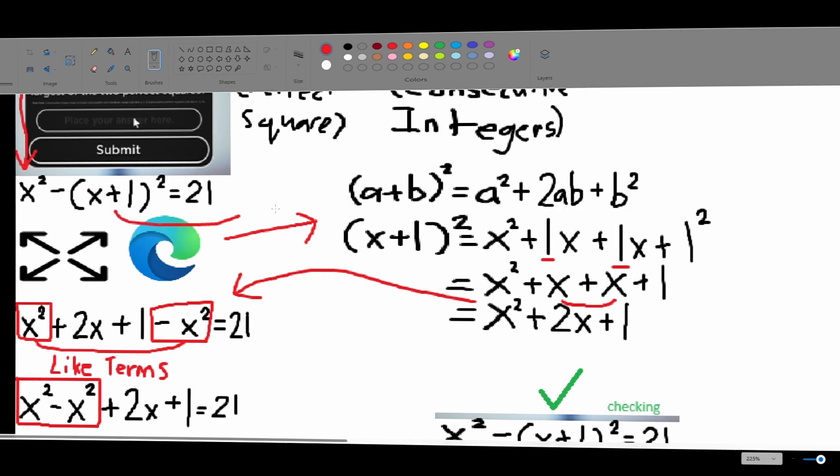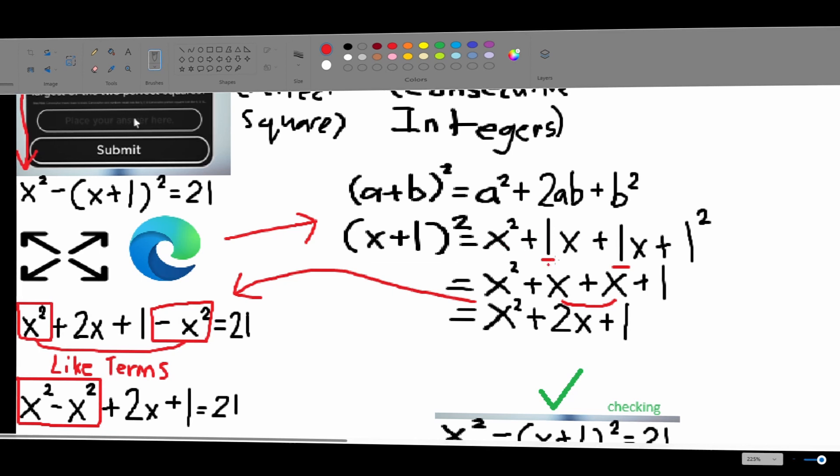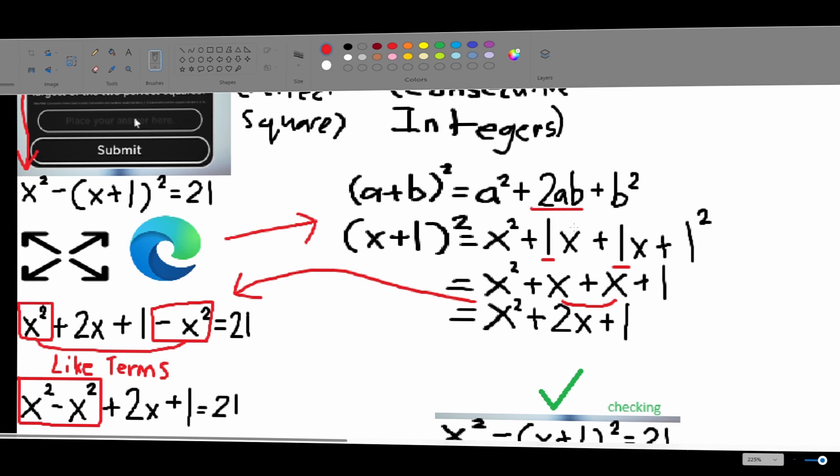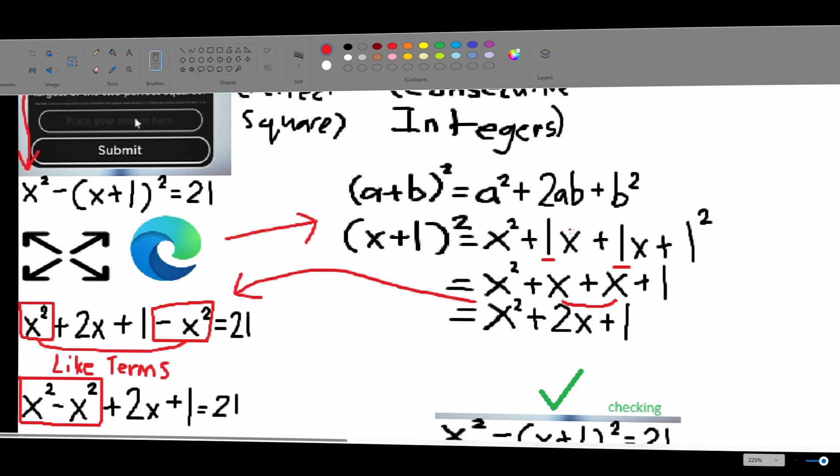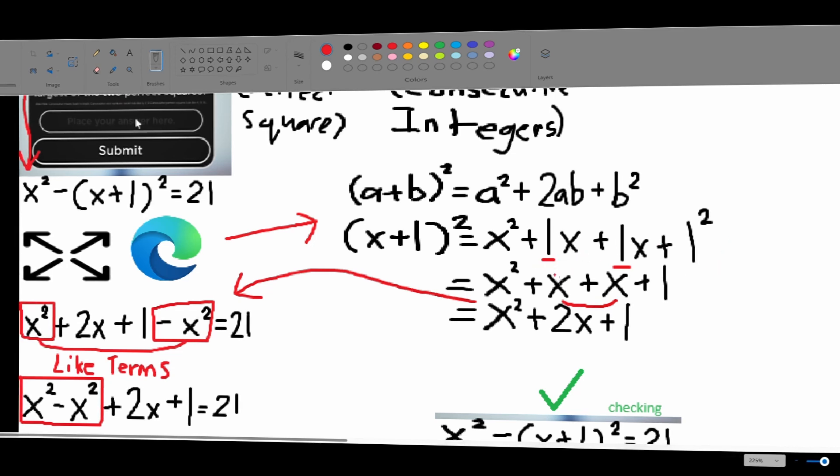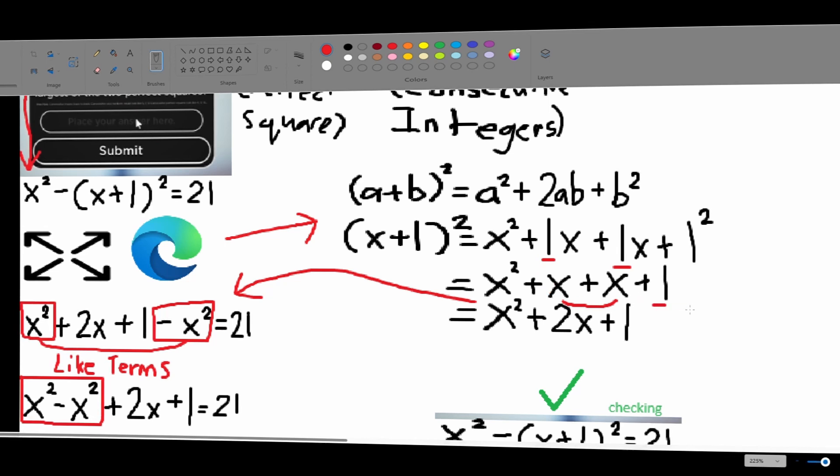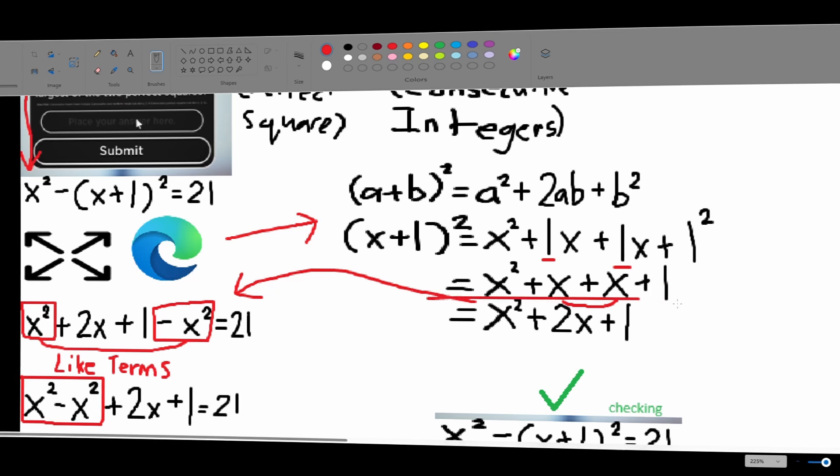So, if we plug in our binomial into that, our output is x squared plus 1x plus 1x plus 1 squared. 2ab, meaning that there's going to be two of this. But before we do anything, we hide these ones and also square this also. We hide the 1 because the x already has a 1, it's just hidden.